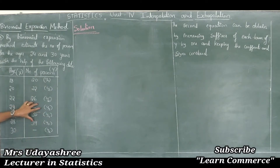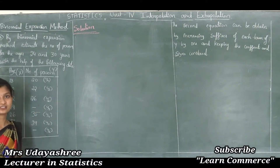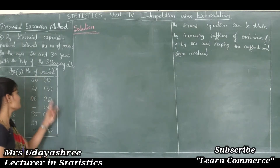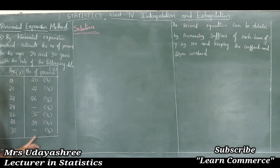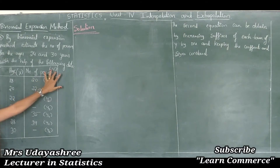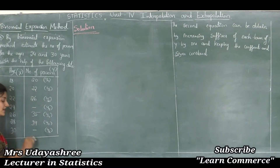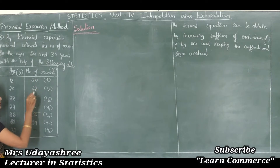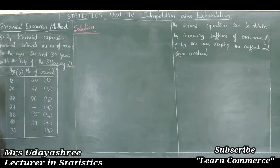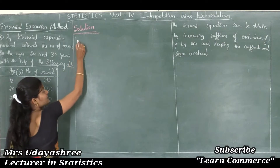For this problem, how do we apply the binomial expansion method? To apply the binomial expansion method there are some procedures. First, we need to find the known number of observations in y. The two unknown observations are y3 and y6, so the known number of observations are 5, that is n = 5.